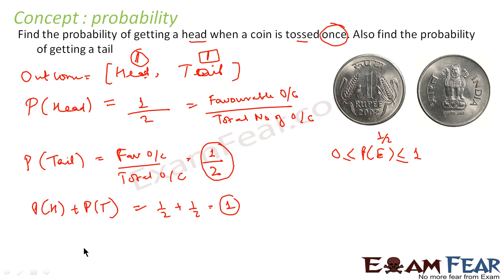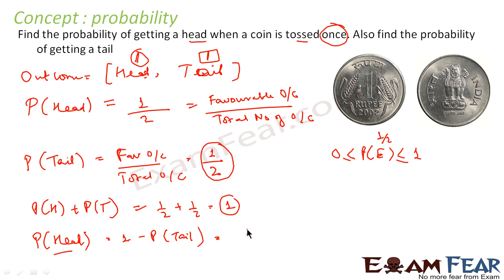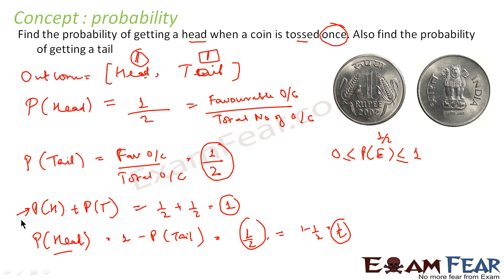We also said that probability of head equals one minus probability of tail. Here probability of head is one by two, and one minus one by two is also one by two, so LHS and RHS are the same. So all three things we have learned are verified: any probability is greater than or equal to zero, less than or equal to one, and the sum of all probabilities is one.